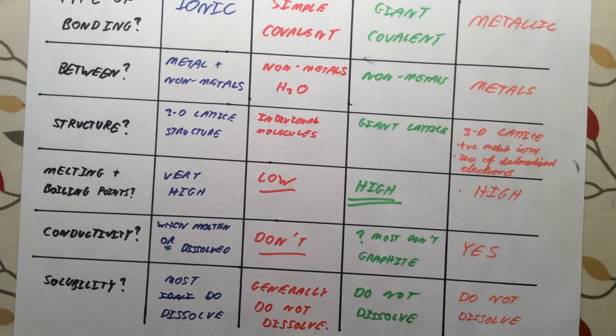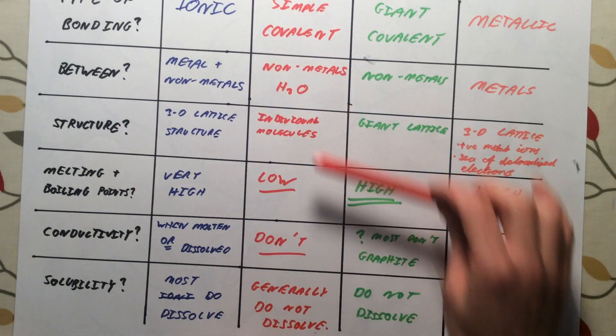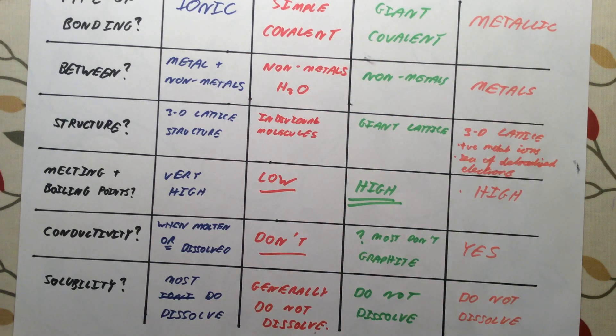That is a summary of our four types of bonding. Try and spend a few minutes learning this. Cover it up. See if you can write it out from scratch. You'll often be given a question in exam where you have a table with lots of different compounds in it. It'll give you things like melting point, boiling point, solubility. You need to be able to say, this particular compound has simple covalent structure because. So write this out. Cover it up. See if you can remember it.